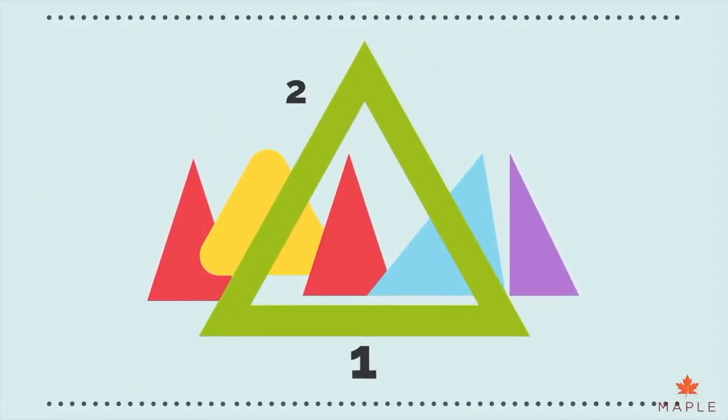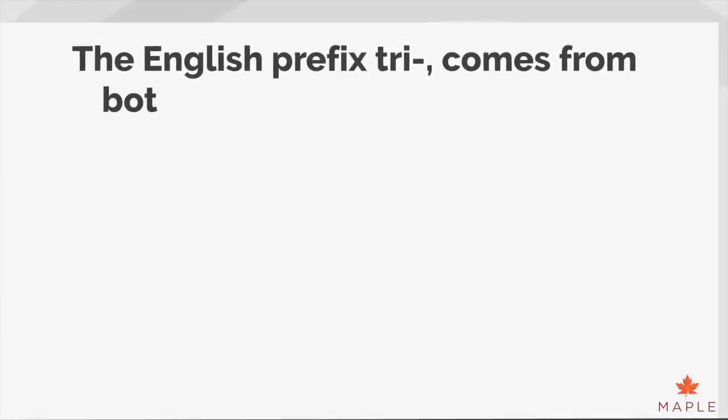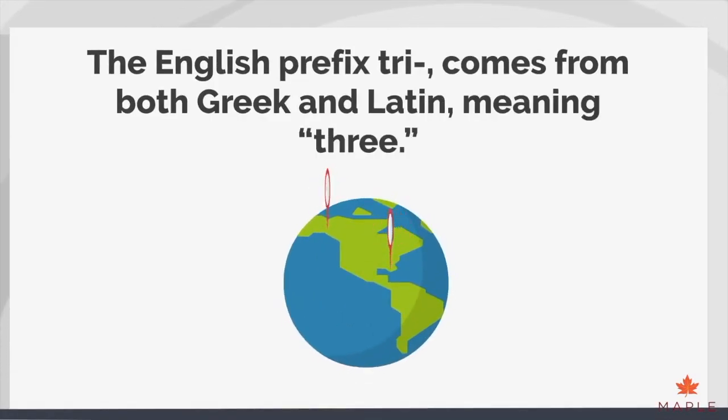All triangles have three sides. The English prefix tri comes from both Greek and Latin, meaning three.